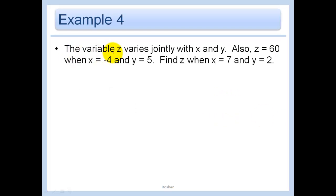So when I say the variable Z, the variable Z varies jointly with X and Y, A, X, Y. And we know Z is 60 when X is negative 4 and Y is 5. So we need to solve for A here. We have 60 equals negative 20A. In other words, A is equal to negative 3. So our equation becomes Z equals negative 3XY.